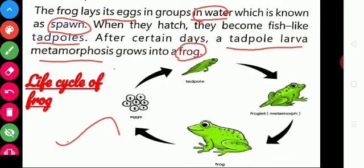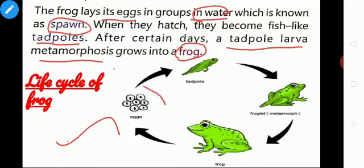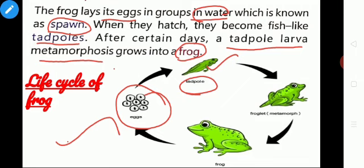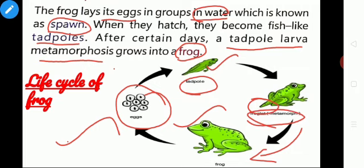This is the diagram for the life cycle of the frog. Initially the frog lays its eggs in groups — this is called spawn. When these eggs hatch they become tadpoles, which are fish-like. After certain days the tadpole grows legs — four legs — and is then called a froglet. A froglet is similar to a frog but with a tail. After certain days the froglet transforms into a frog, which again lays eggs and the cycle continues. This is an example of metamorphosis.